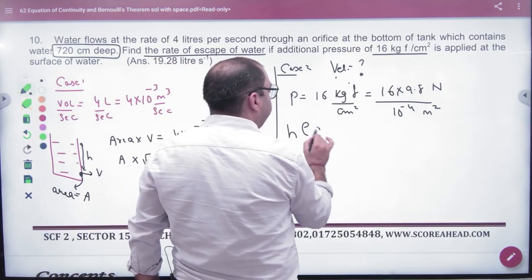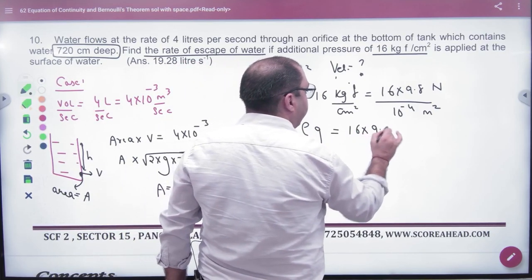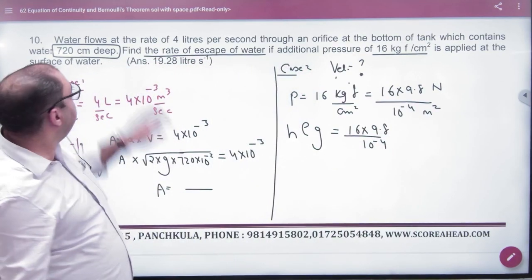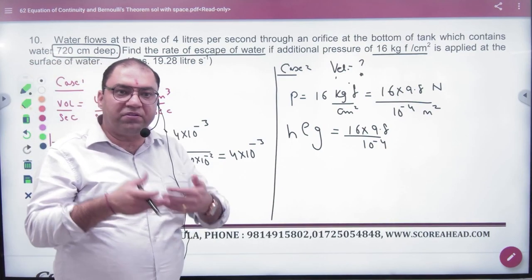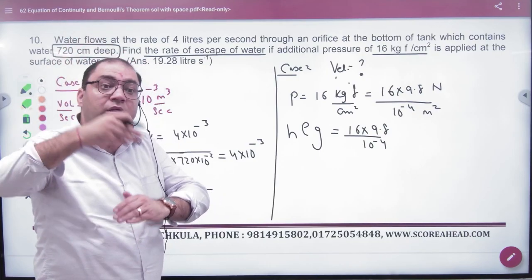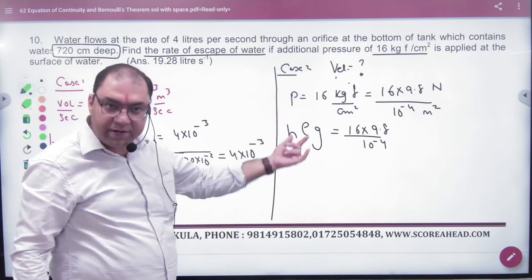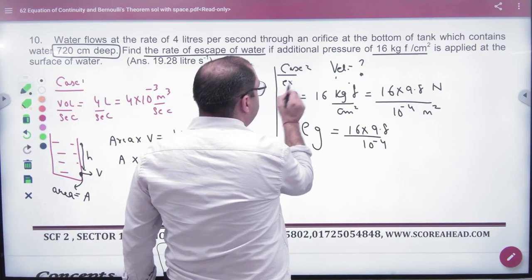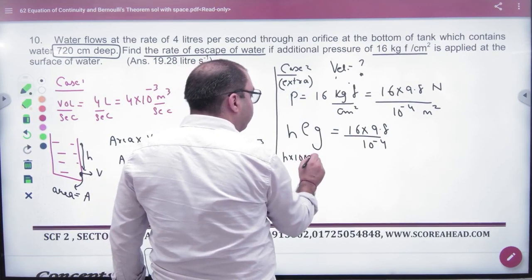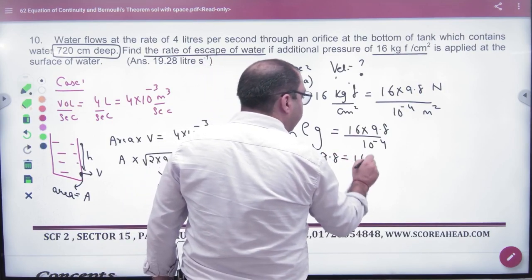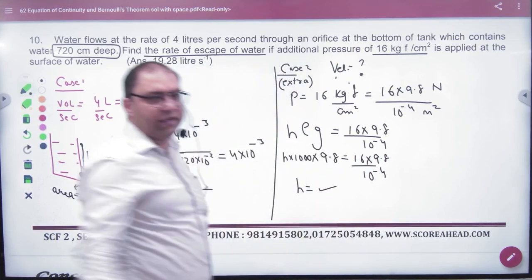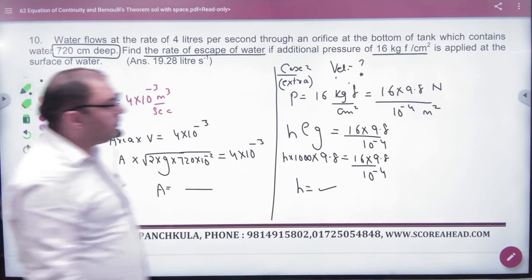H rho g is equal to 16 into 9.8, 10 to power minus 4. Is liquid water? Basically 720 cm water before. You have more water pressure. How much height water here is extra pressure? I will tell you what is extra pressure. So extra height H into density of water into 9.8 is 16 into 9.8 by 10 to power minus 4.